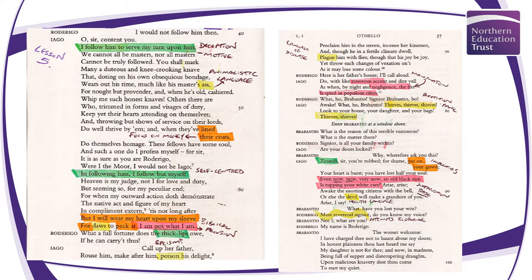'Proclaim him in the streets, incense her kinsmen, and though he in fertile climate dwell, plague him with flies, though that his joy be joy, yet throw such changes of vexation on it as he may lose some colour.' He's saying, get Brabantio and poison him with your words — poison what should be a joyous thing. Then Iago instructs Roderigo to shout it like there's a fire in the streets, here just manipulating Roderigo.